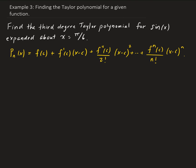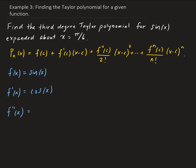Let's start with our function, sine x. The first derivative will be cosine x. The second derivative — the derivative of cosine — is minus sine x. The third derivative is going to be minus cosine x. Now we have to evaluate these at our expansion point, which is pi over 6.